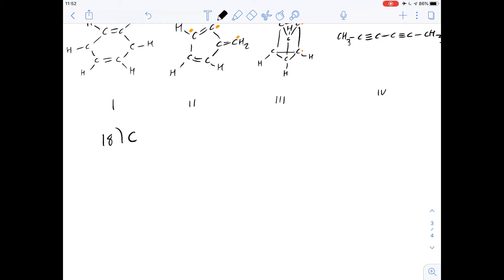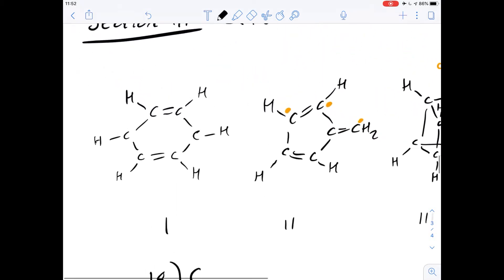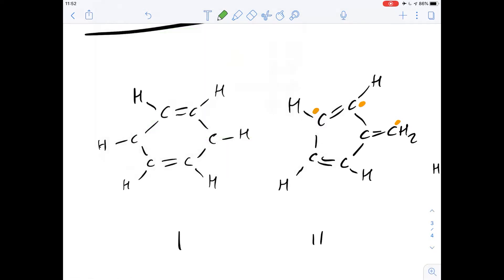Let's have a look at number 19. How many different di-substituted isomers can be produced from structure 1? Well this is where I'm going to start drawing lines.